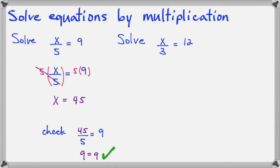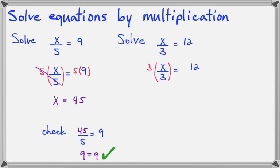Let's try another one. Some number divided by 3 equals 12. Your mind may jump to the number 4, because you see the 3 and the 12, and your mind just automatically fills in that 4. But could 4 divided by 3 equal 12? That doesn't make sense. So we want to cancel this 3 out of the bottom by putting a 3 in the top, and we'll put a 3 on the other side. Now the 3s cancel, and x equals 3 times 12, which is 36.